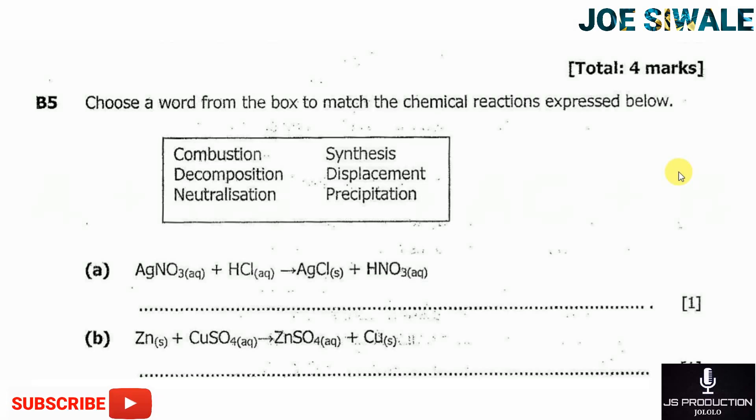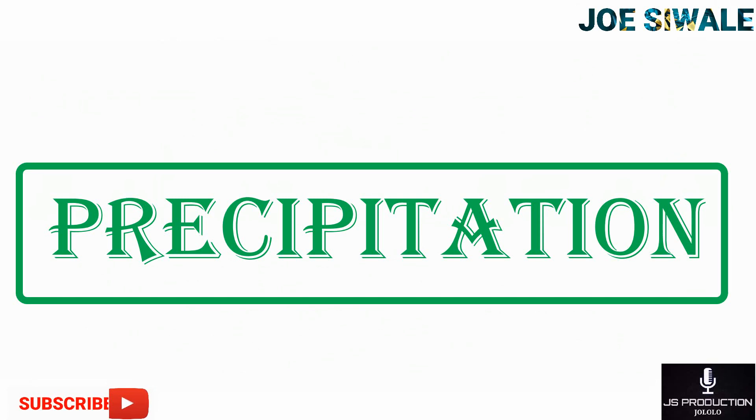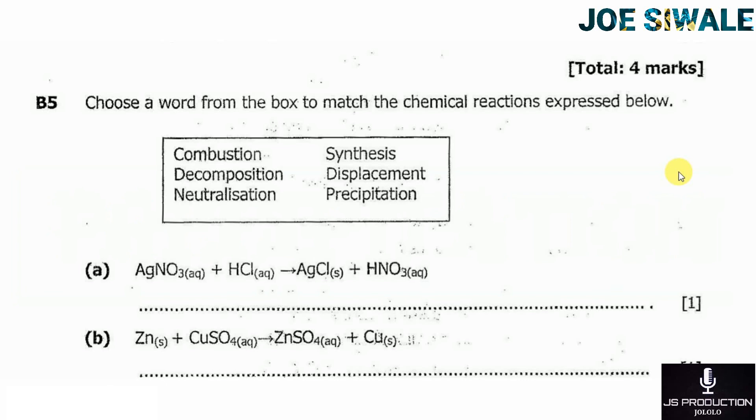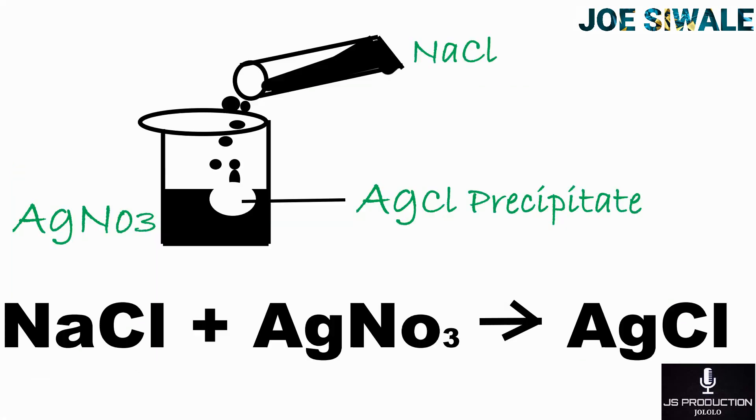Then what is precipitation? A precipitation is a type of reaction in which an insoluble salt is formed from the reaction of two soluble salts. An example of a precipitation reaction involves the reaction of sodium chloride plus silver nitrate. This produces silver chloride, which is an insoluble salt.